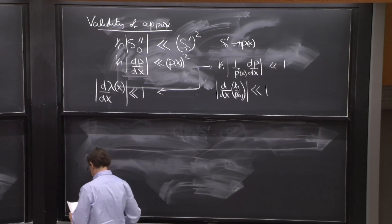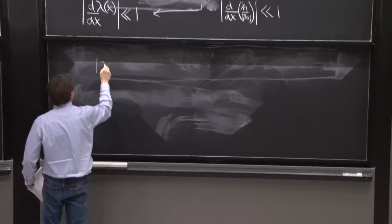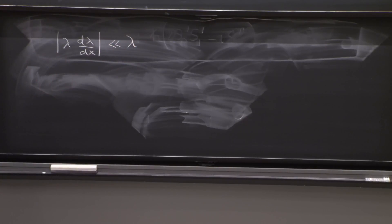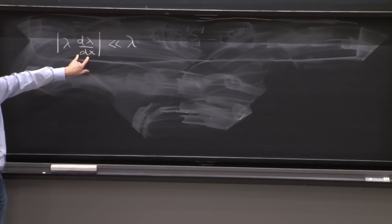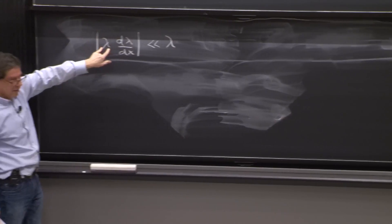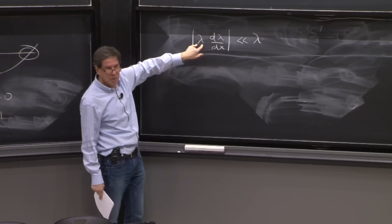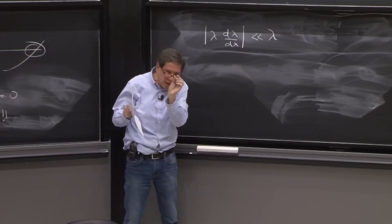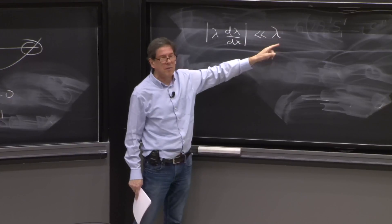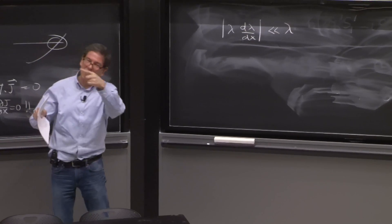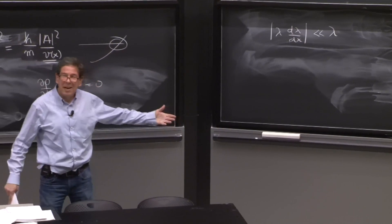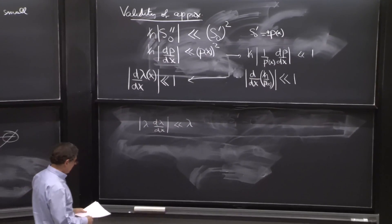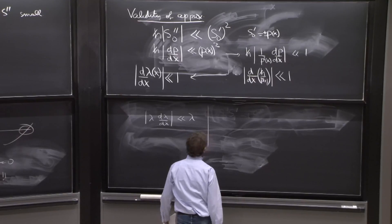This is a conventional inequality. Most of us would prefer to write it as: lambda times d(lambda)/dx much smaller than lambda. This is a little clearer, because it represents how much the de Broglie wavelength changes over a distance equal to the de Broglie wavelength. So the change of the de Broglie wavelength after you move one de Broglie wavelength must be smaller than the de Broglie wavelength itself. You can play with those inequalities; it takes a while to convince yourself you're not missing anything.